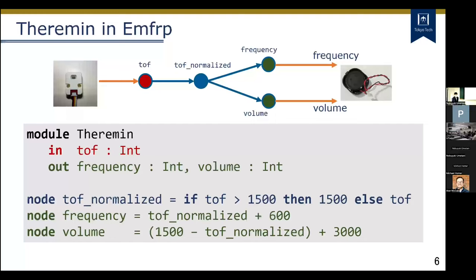The values of output and intermediate nodes are defined using the keyword 'node'. The connections between input and output nodes and external devices such as sensors and speakers are handled via C functions. As you can see in this example, MFRP looks simple — you do not need to write boring loops or callback functions to update sensor readings and their dependencies.